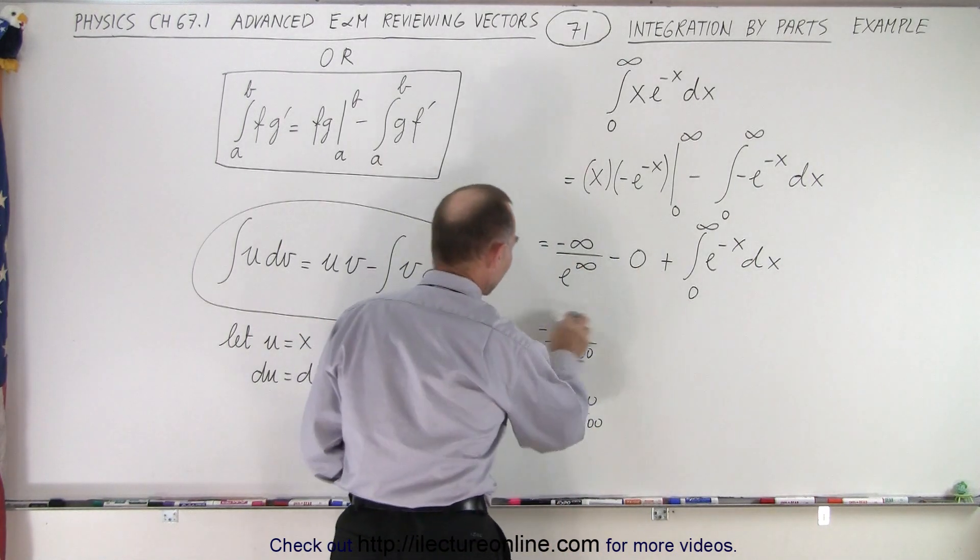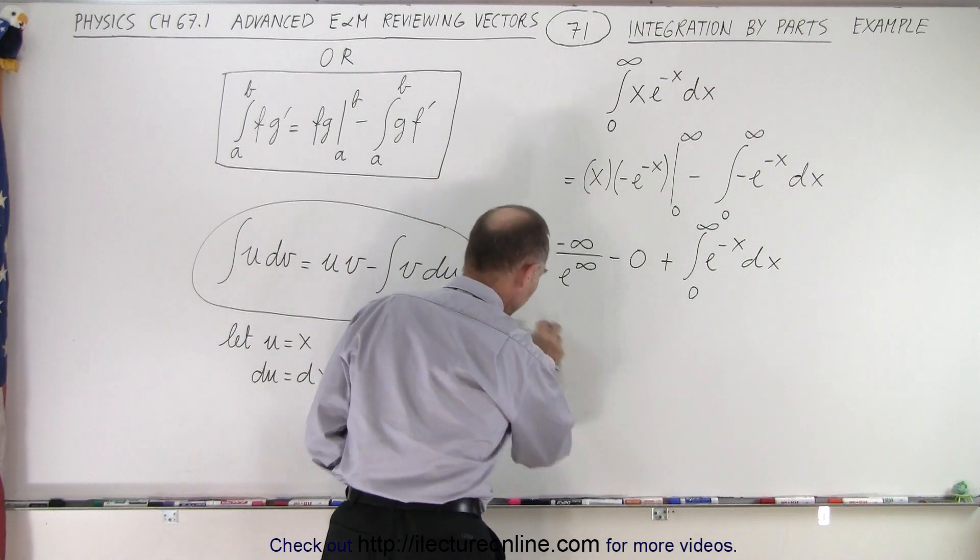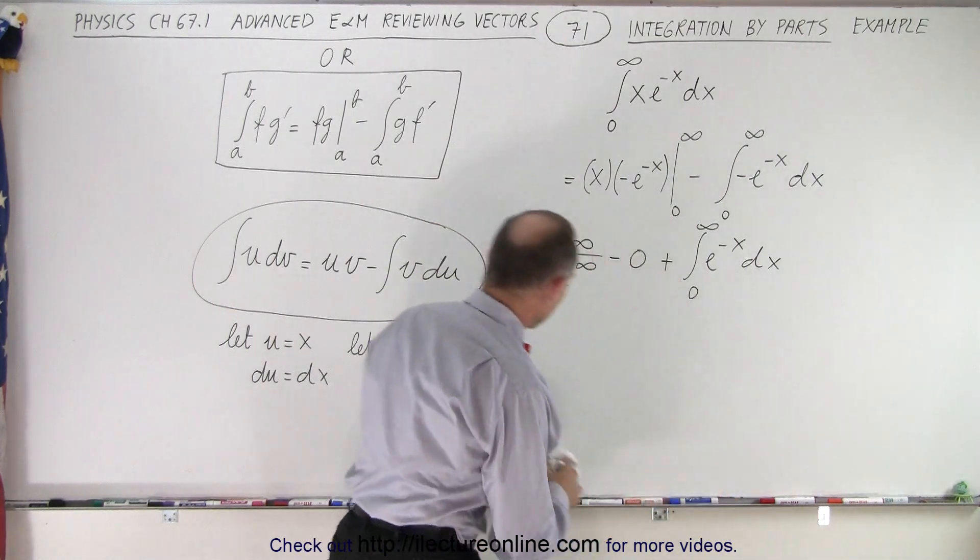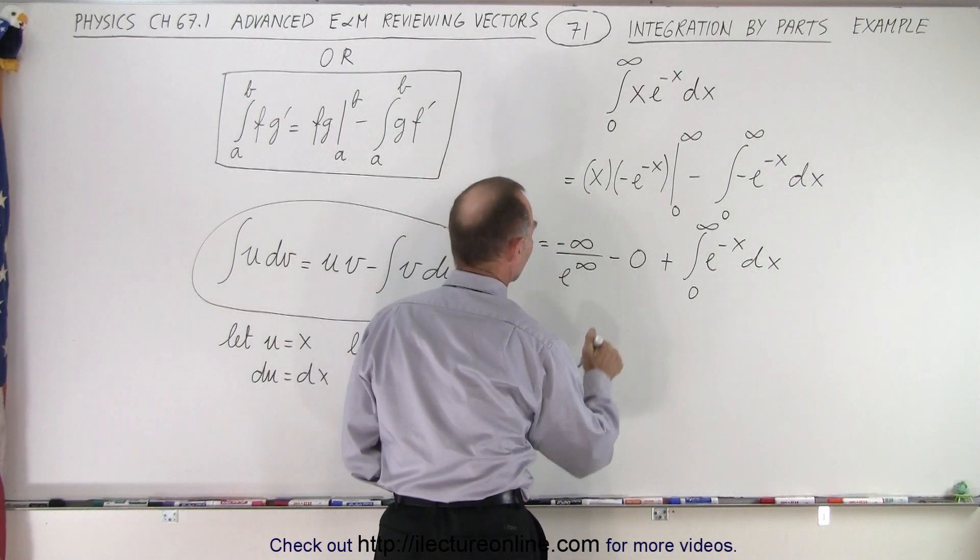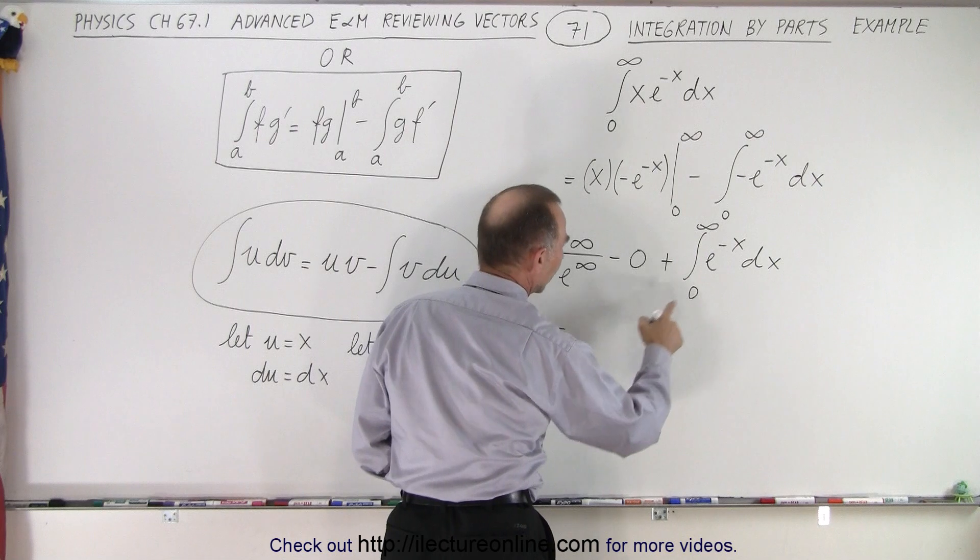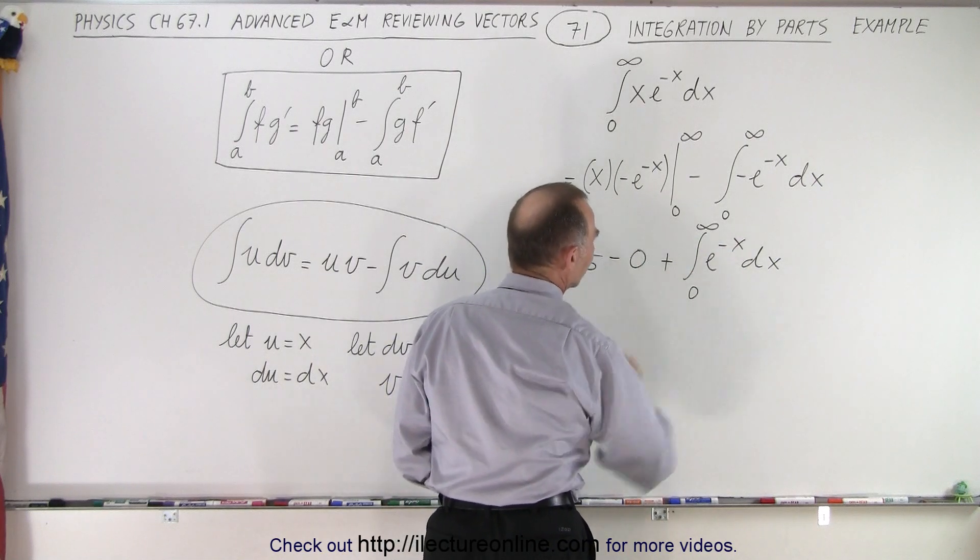So that can then be thought of as 0. And let me dry the board, otherwise I can't write on it. There we go. So essentially, this becomes 0 minus 0. So we end up with the integral of e to the minus x dx.